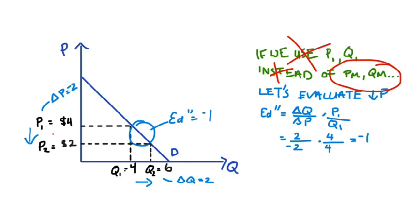And so the midpoint does exactly that. The midpoint doesn't change whether we're increasing or decreasing between, in this case, prices two and prices four. And so what that means is that our elasticity is going to be exactly the same in both cases.